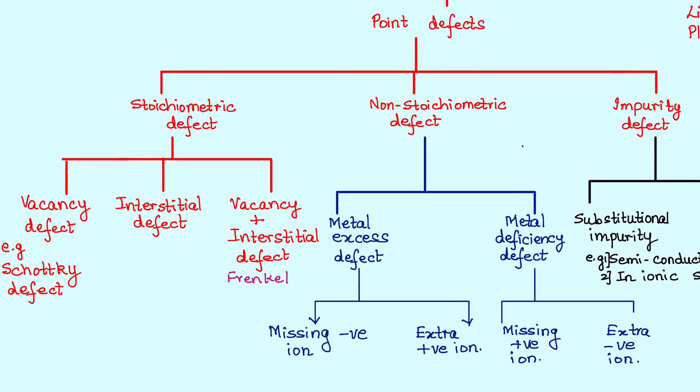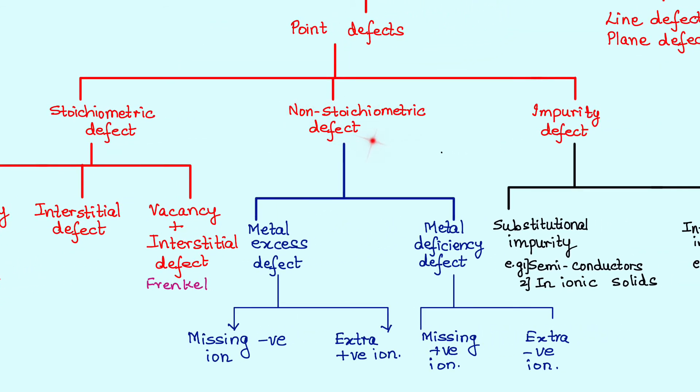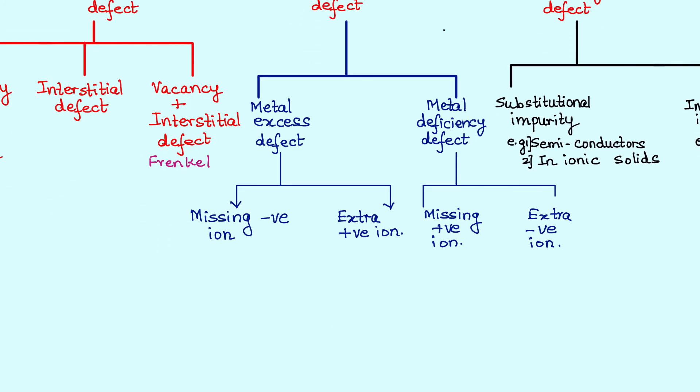The second category of point defects are the non-stoichiometric defects, further classified into the metal excess defect. That means the cations are greater than the anions in the case of, yes, ionic compounds. Metal deficiency defect. That means the cations are less than the anions in the case of, yes, ionic compounds. When can we have a metal excess defect? So that means either the negative charge is less or the positive ions are more. Same way, when can we have the metal deficiency defect? That means either the plus is missing, then only there will be a deficiency or there is an extra minus.